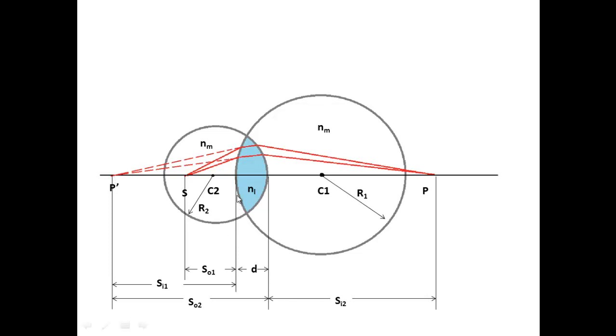Naming a few more things. The lens itself is as thick as the distance d. We've still got the object distance 1 giving us the image distance 1, which serves as the object of the second interface, giving us the second image distance.